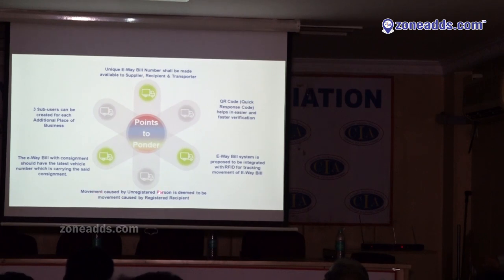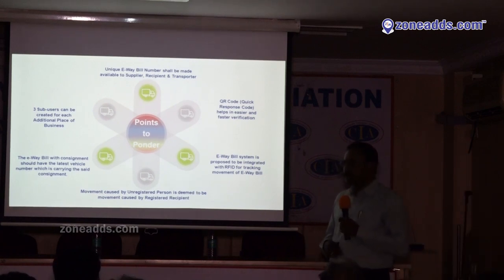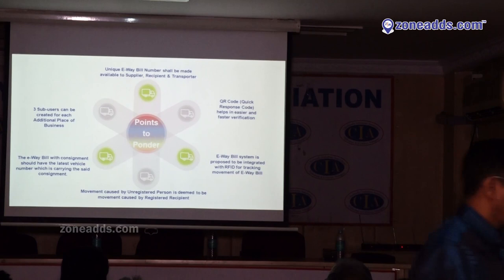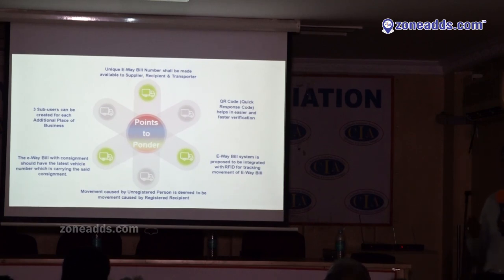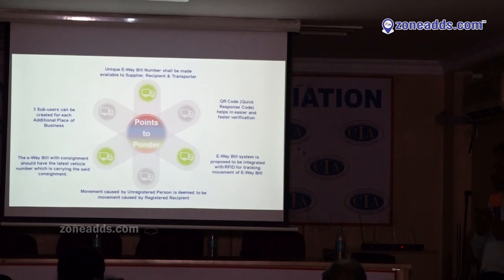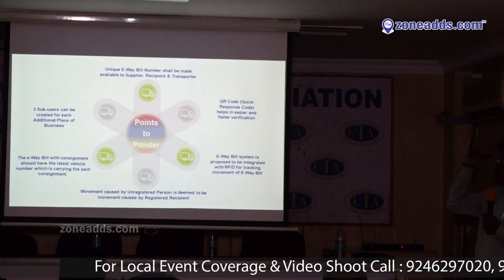Movement caused by an unregistered person is deemed to be movement caused by the registered recipient — meaning if the supplier is not registered but the customer is, the customer is responsible for generating the E-way bill. The E-way bill should always have the latest vehicle number. If the vehicle breaks down, the transporter can transfer goods to another vehicle but must update the vehicle number in the E-way bill — otherwise it is not valid. The vehicle number can be updated any number of times, but within the validity period. Validity starts from the time the first vehicle number was entered.